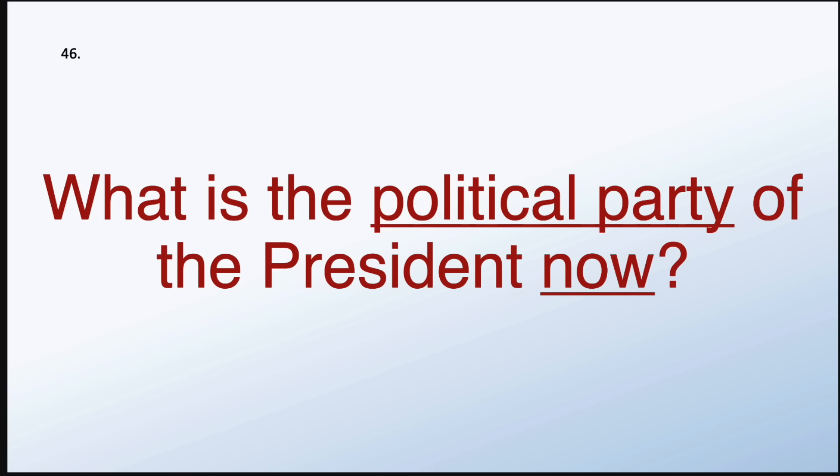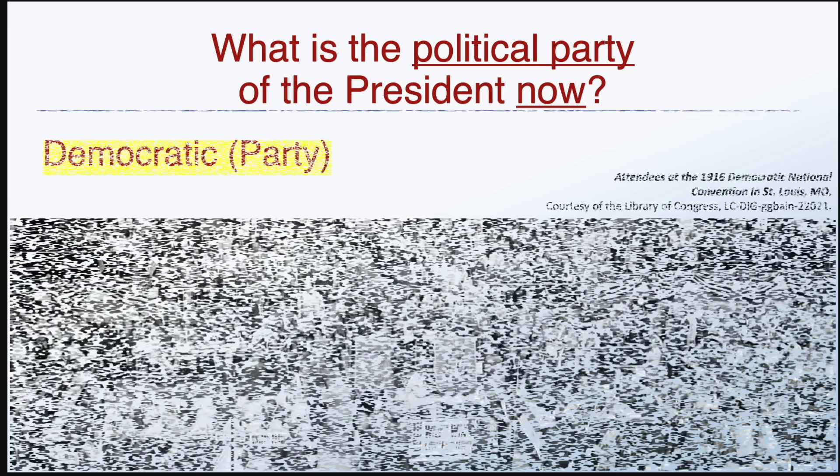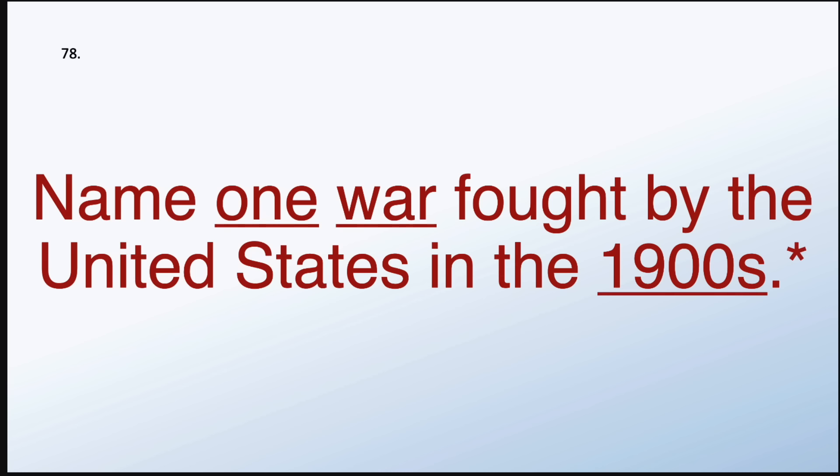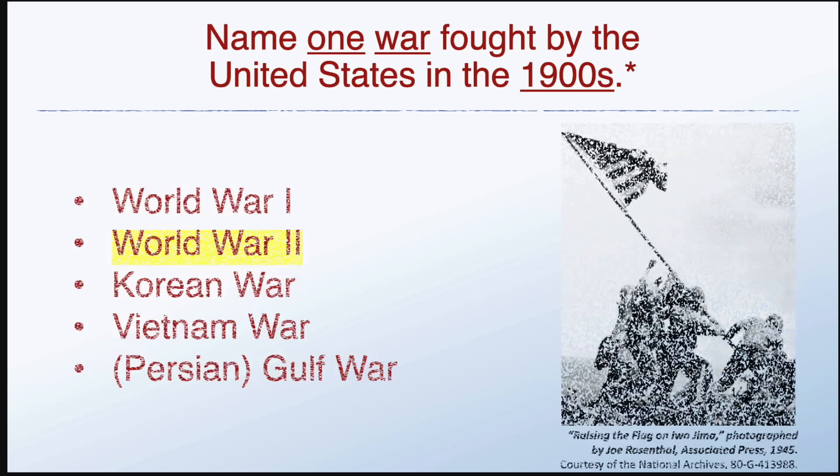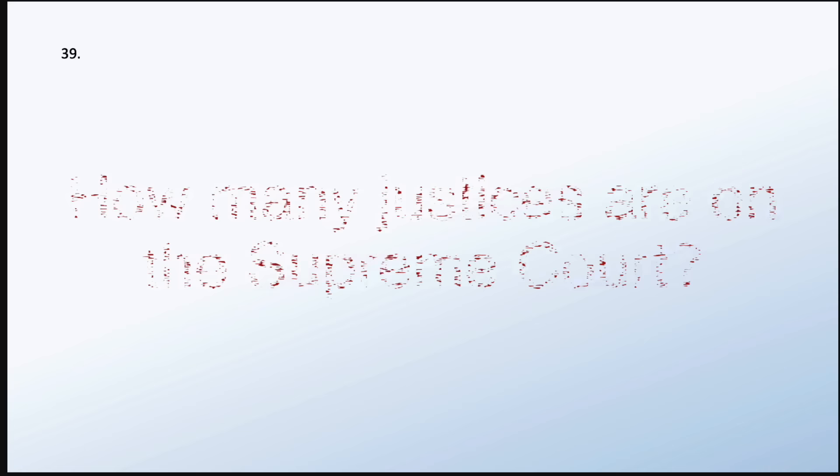What is the political party of the president now? Democratic Party. Name one war fought by the United States in the 1900s. World War II. What is an amendment? A change. How many justices are on the Supreme Court? Nine.